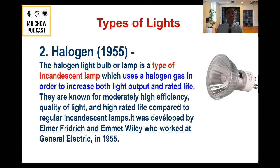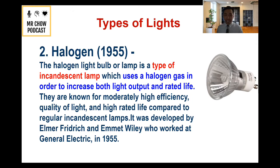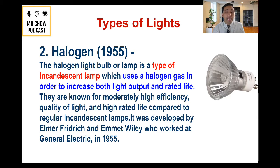In 1955, the halogen came. It's really a type of incandescent lamp that uses a halogen gas in order to increase light output and rated life. They're known for increasing efficiency, the quality of light, and being cheaper.